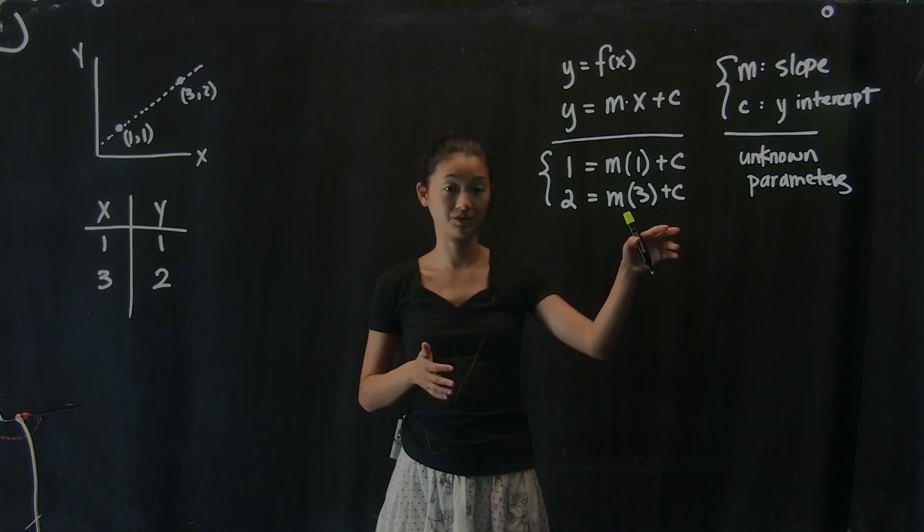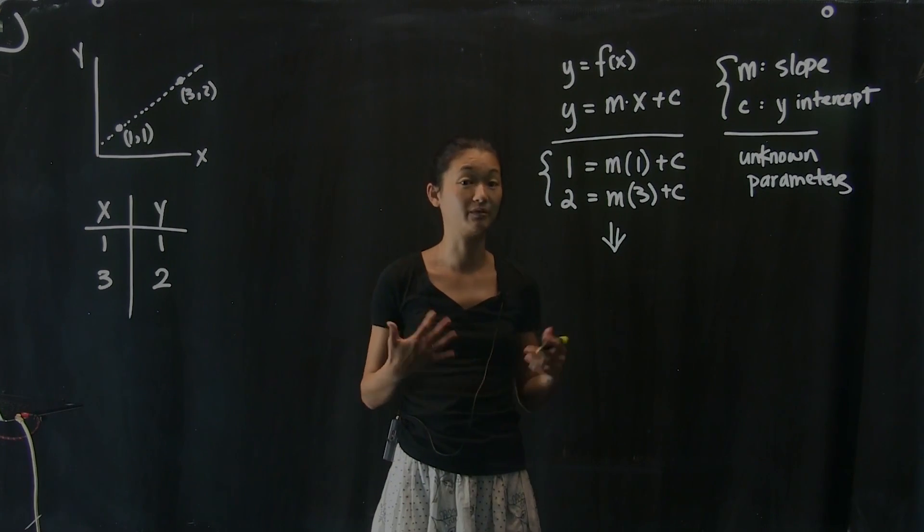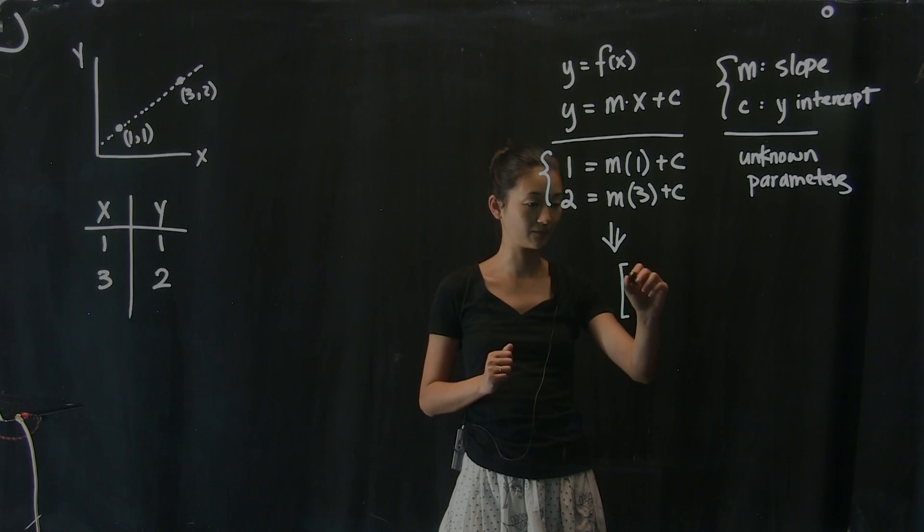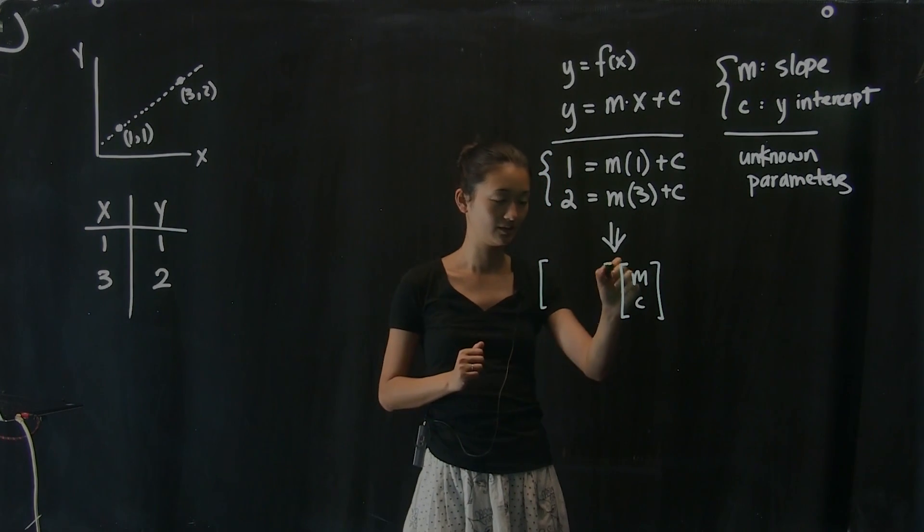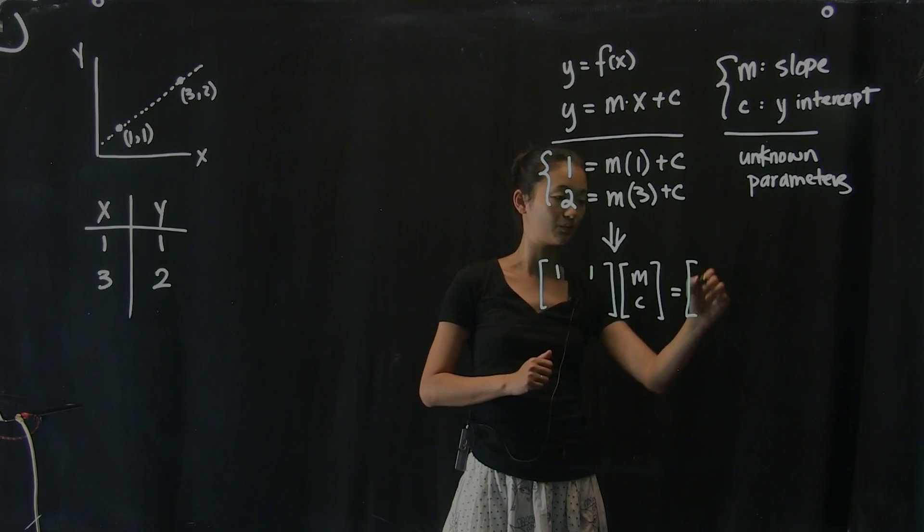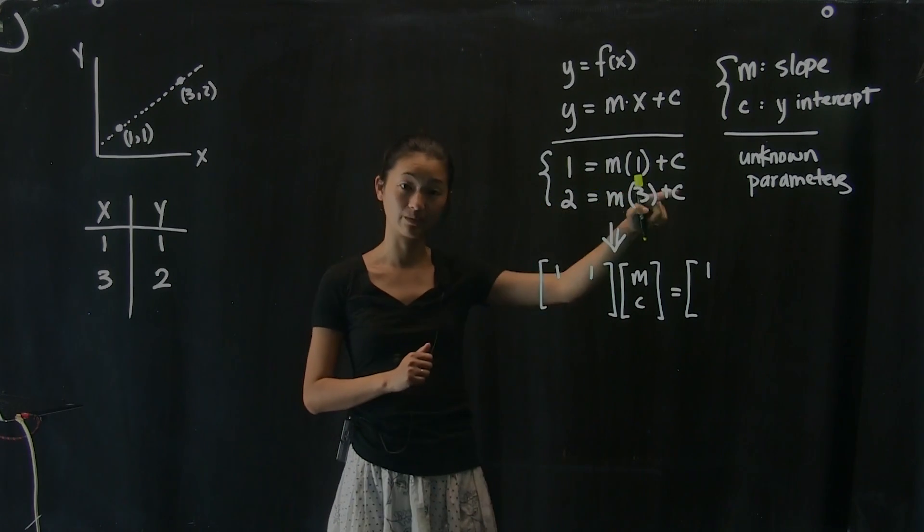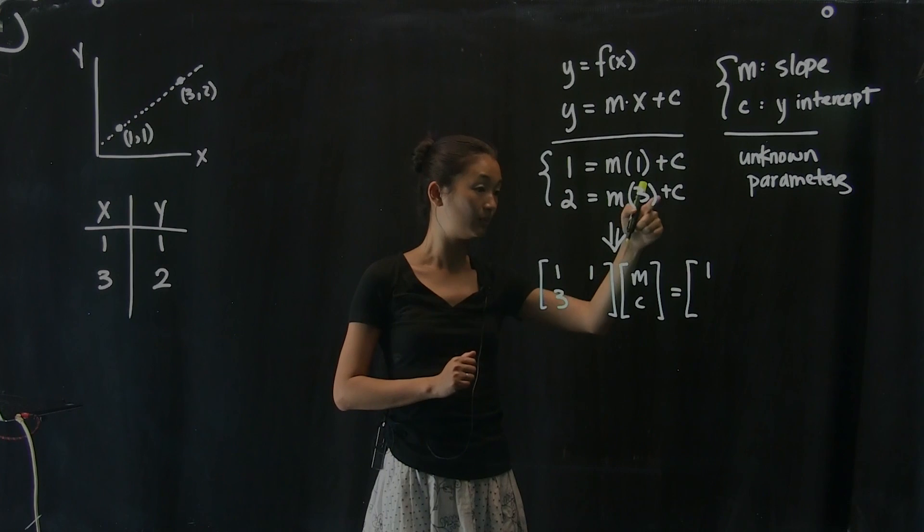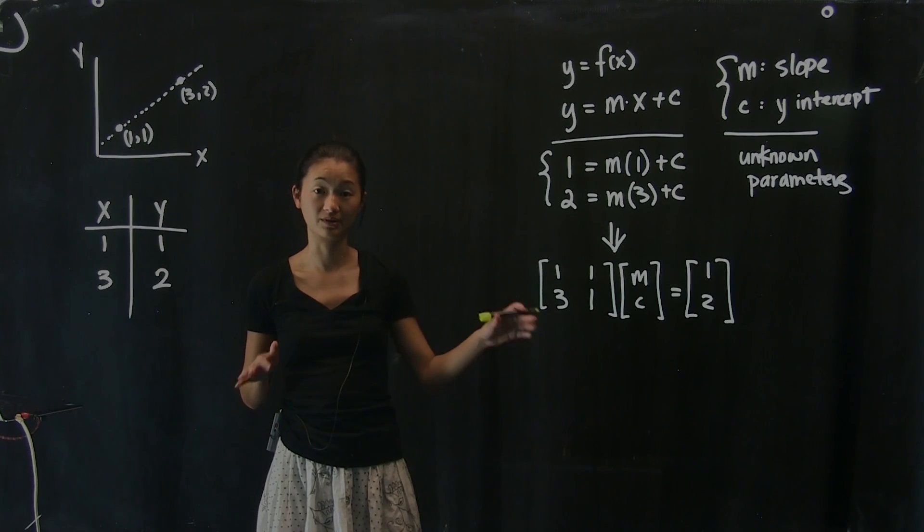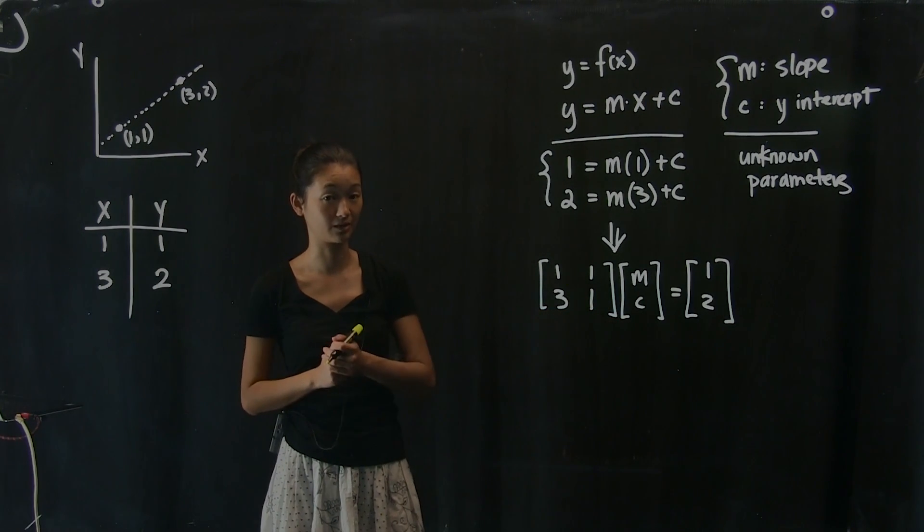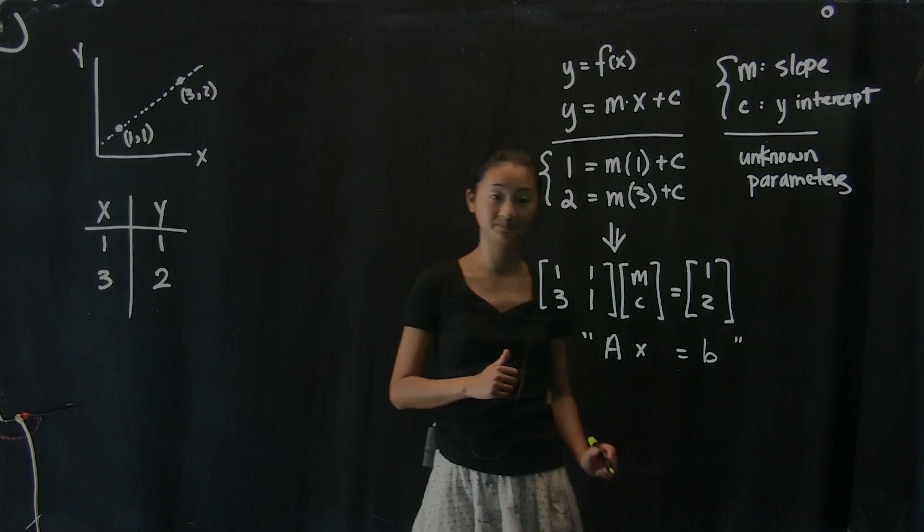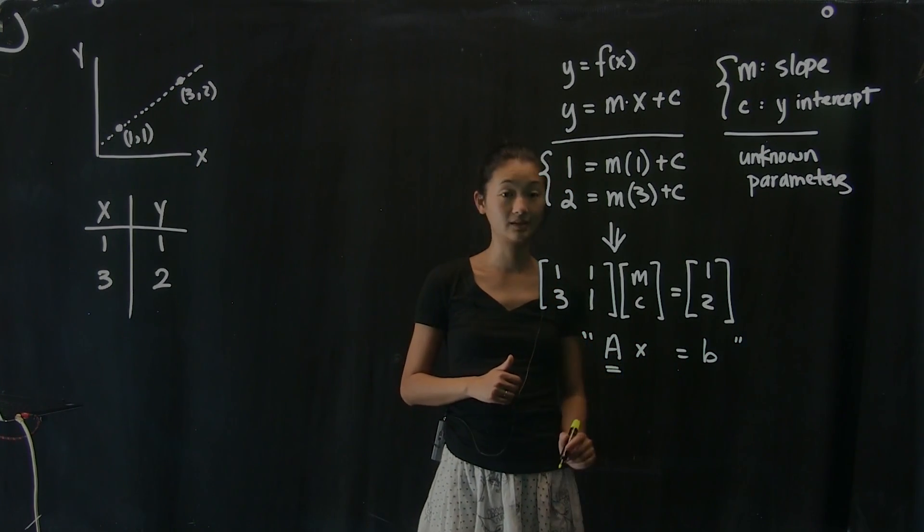So what I'm going to do is take the system of equations and represent it in terms of a system of matrix equations. So I'm just going to rewrite it and here's what it's going to look like. I know I have a system of unknowns, so I have to solve for m and I have to solve for c. And, well, 1 times m plus 1 plus c equals the first point, y equals 1. I'm going to do the same thing for the second equation. So m times 3 plus 1 times c equals 2. So this should start looking very familiar to you. This is exactly the same system of matrix equations that we talked about in the last week. So this is one of those Ax equals b equations.